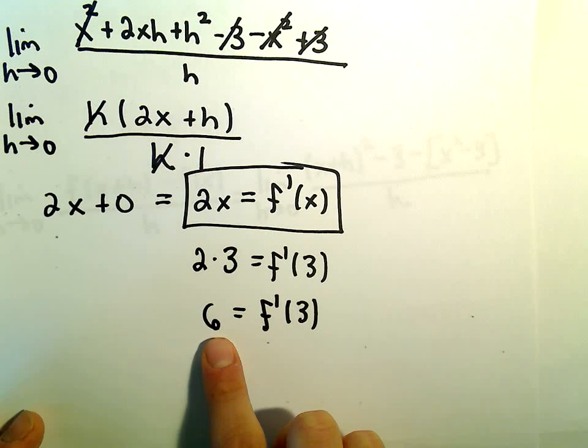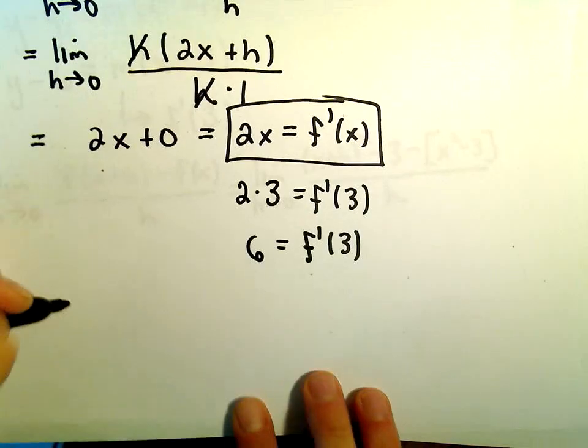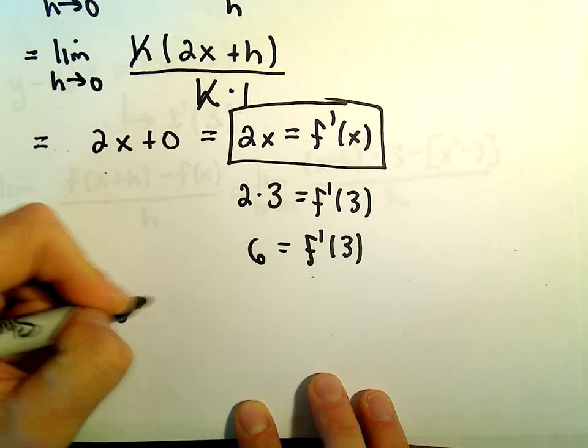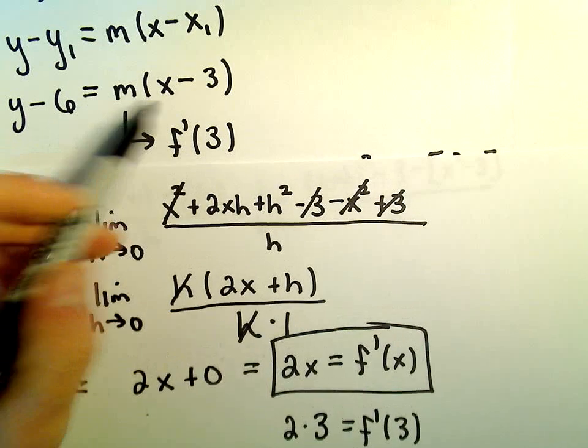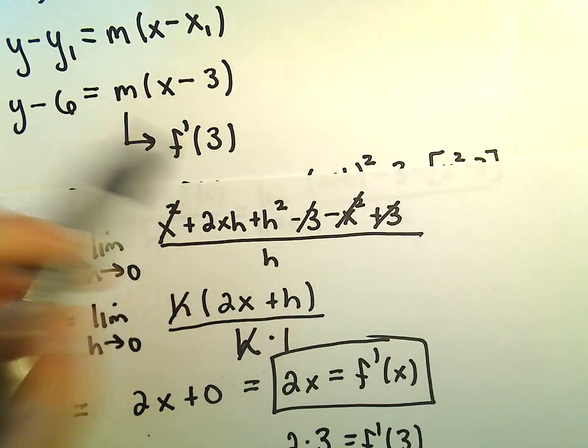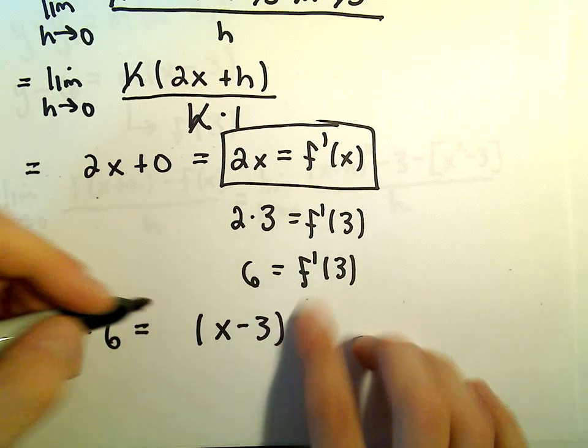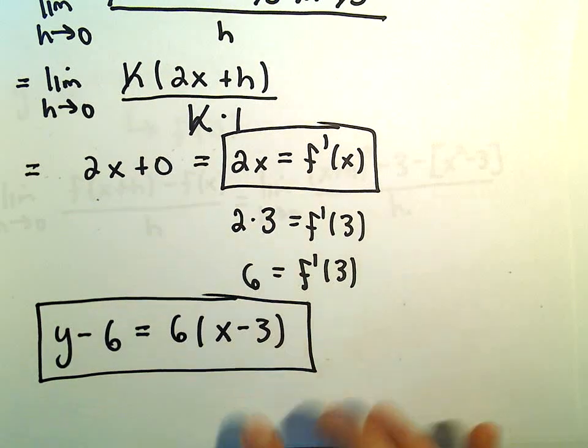Equivalently, the instantaneous rate of change, or the slope of the tangent line, is 6. Our equation is y - 6, we figured out the slope m = f'(3) = 6, and the other part is x - 3. So now we have the equation of our tangent line.